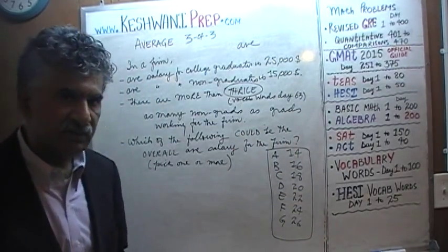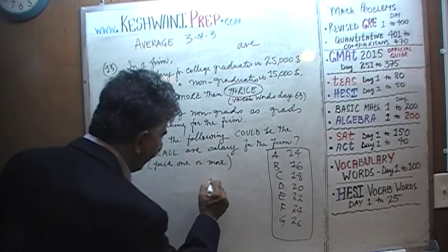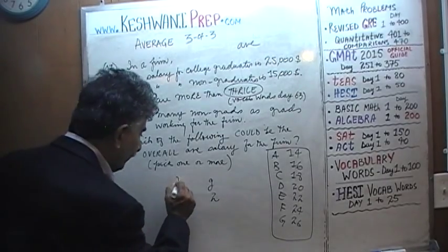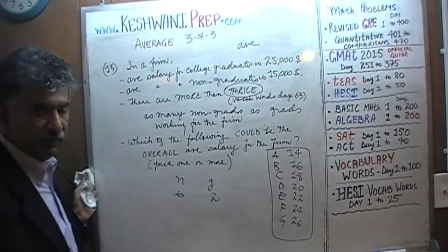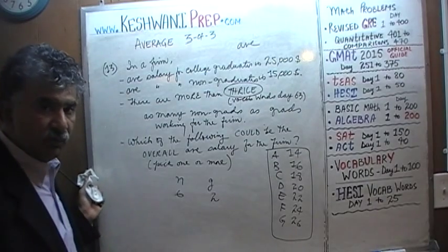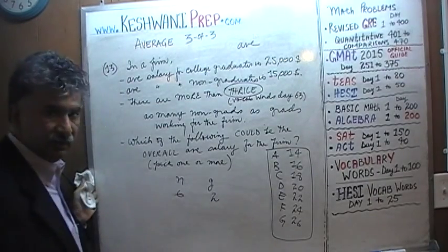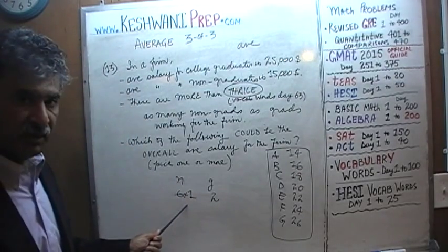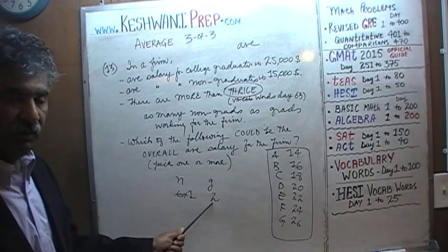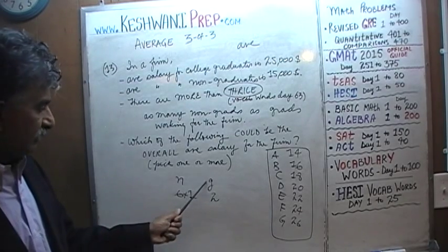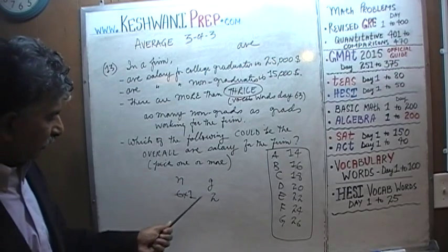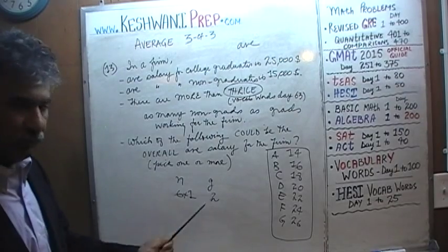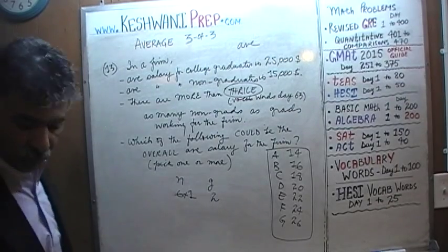So there are more than thrice as many non-graduates. In other words, if we have two graduates — two people with a college degree working in the firm — then for non-graduates we cannot have six people or fewer, because six is exactly thrice as many. We would have to have a minimum of seven people with no college degree working for the firm if there are two college graduates. More than thrice as many.